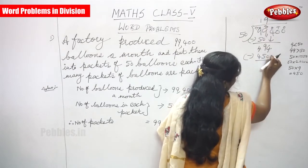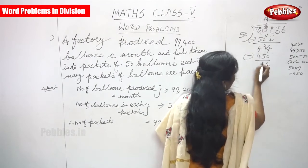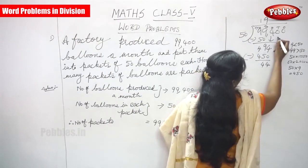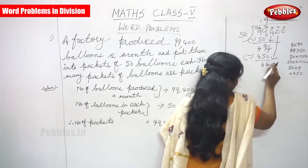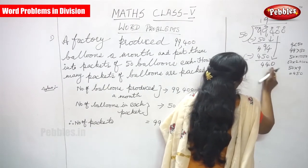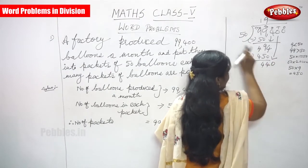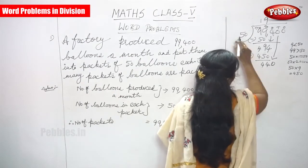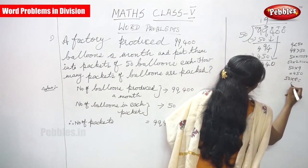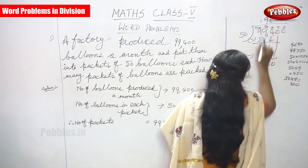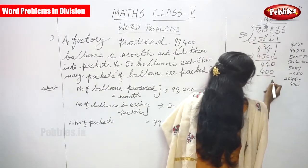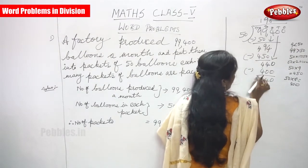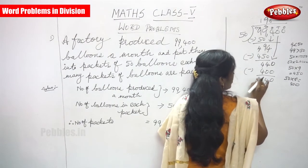Subtract from 494: 4 minus 0 is 4, 9 minus 5 is 4, 4 minus 0 is 4. Bring down the next digit — that is 0. Before the 0 it is less than 50, but with 0 added it becomes 400, which is greater than 50. 50 into 8 you can get 400. So write 8 here. 0 minus 0 is 0, 4 minus 0 is 4, 4 minus 4 is 0. So compare 40 and 50 — 40 is less than 50.